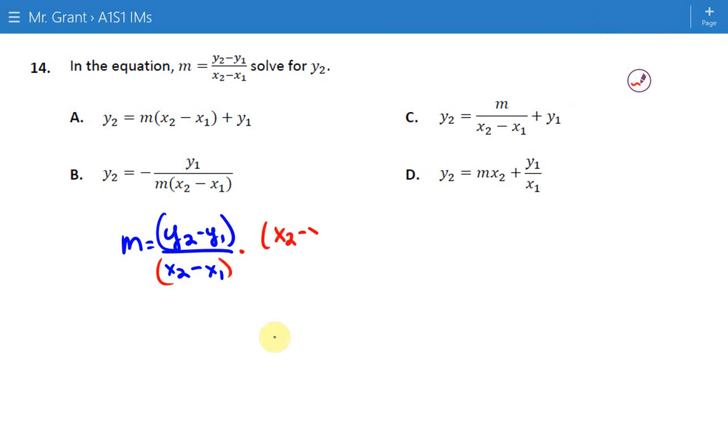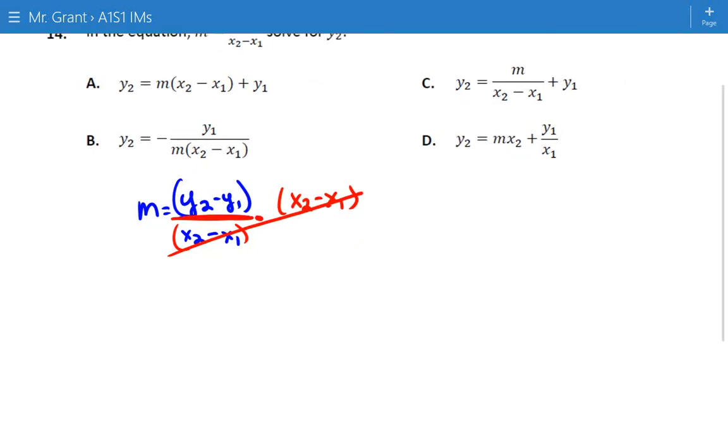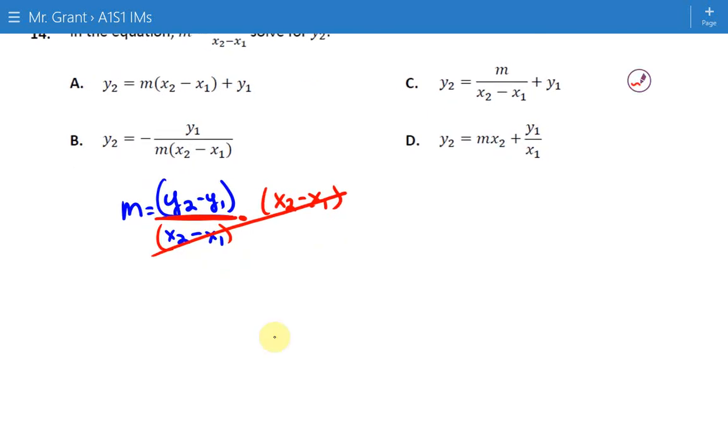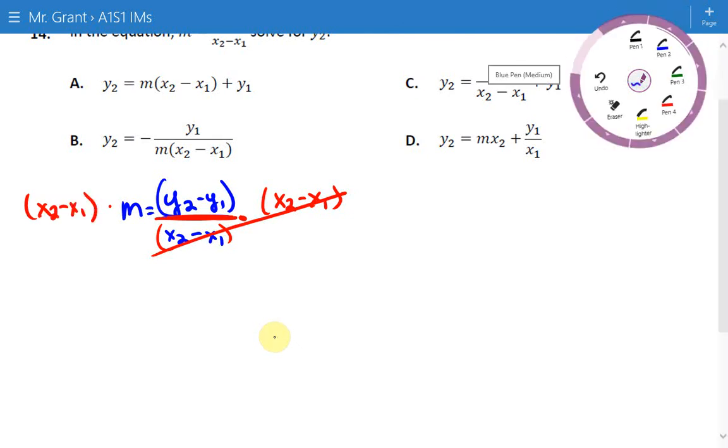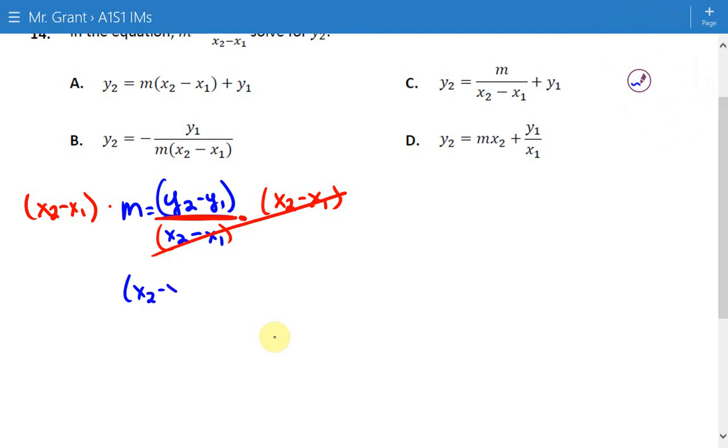So what we're going to do is multiply by x2 minus x1. We have division here, multiplication here. Those two will cancel each other out. Of course, properties of equations say that if you do something to one side, you better do that to the other side. This then gives me x2 minus x1 times m equals y2 minus y1.